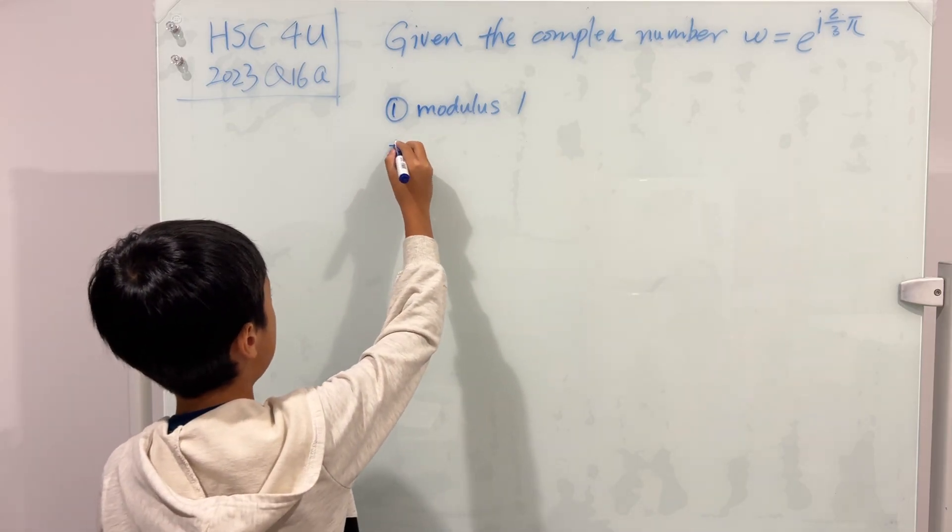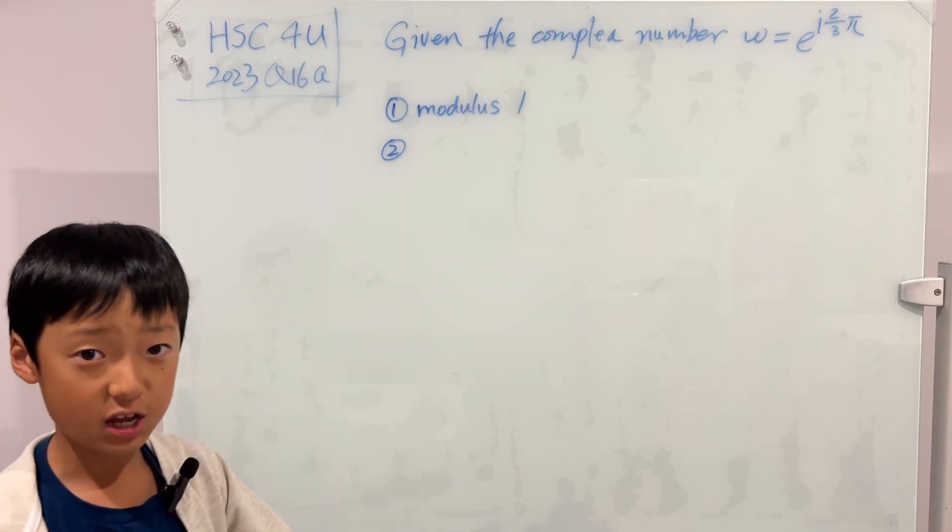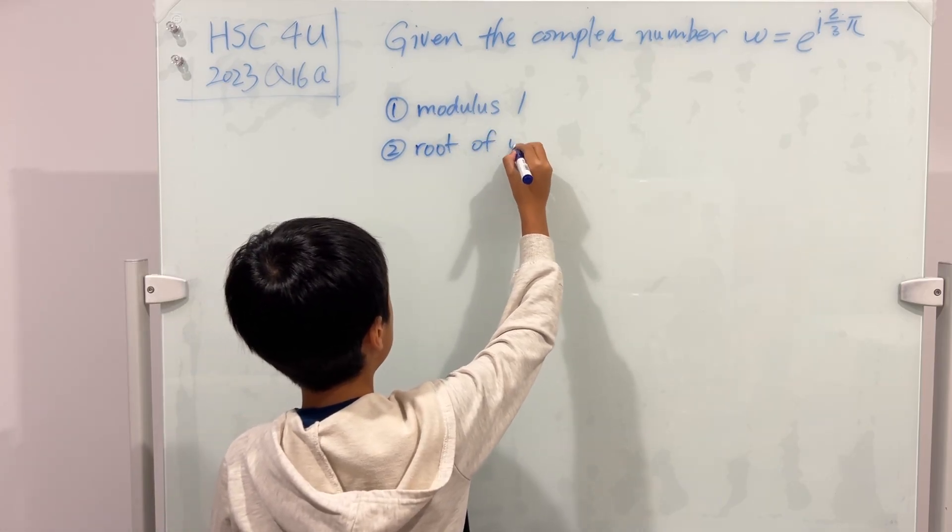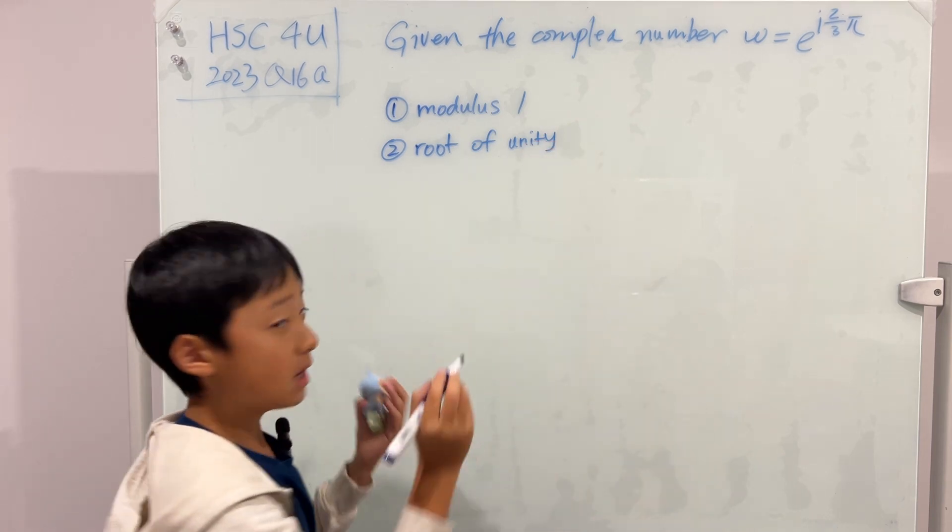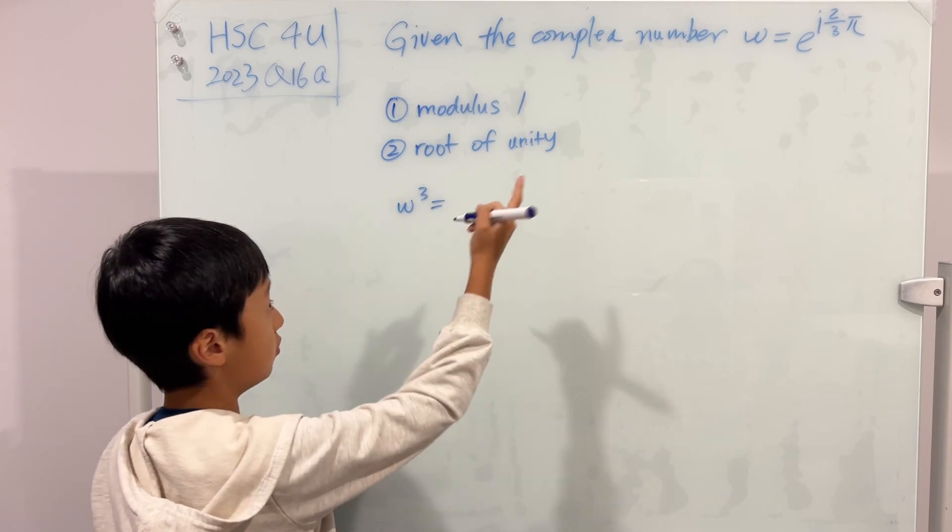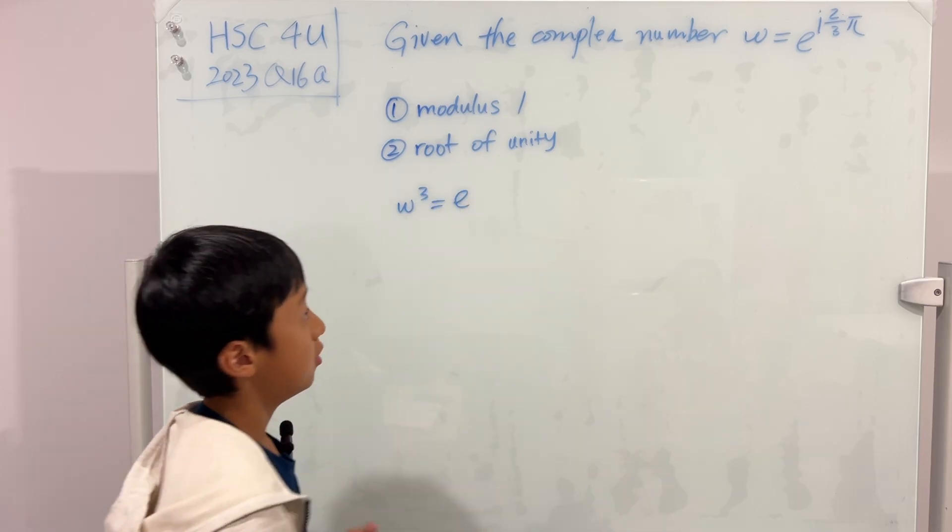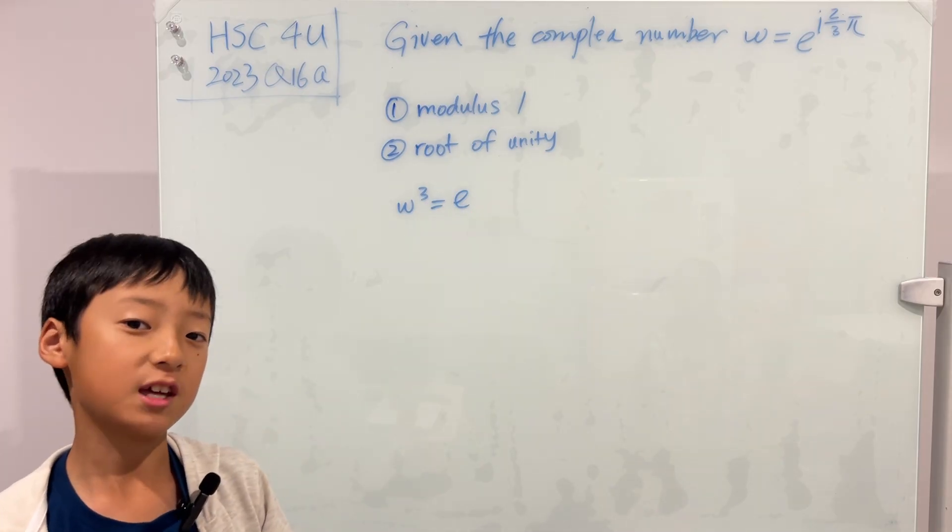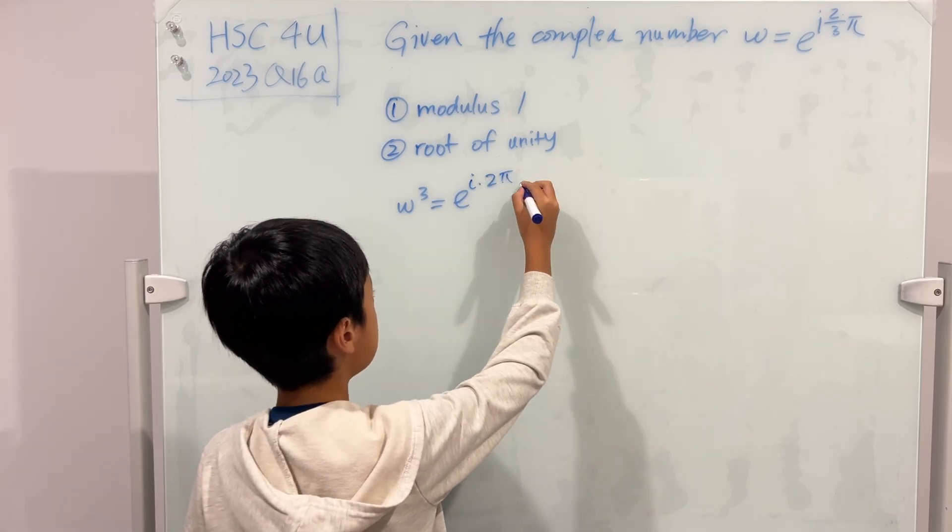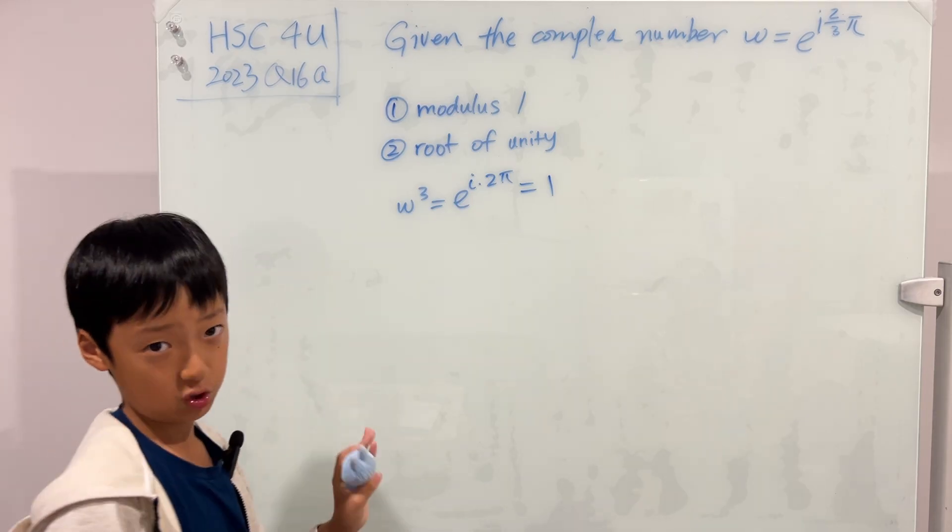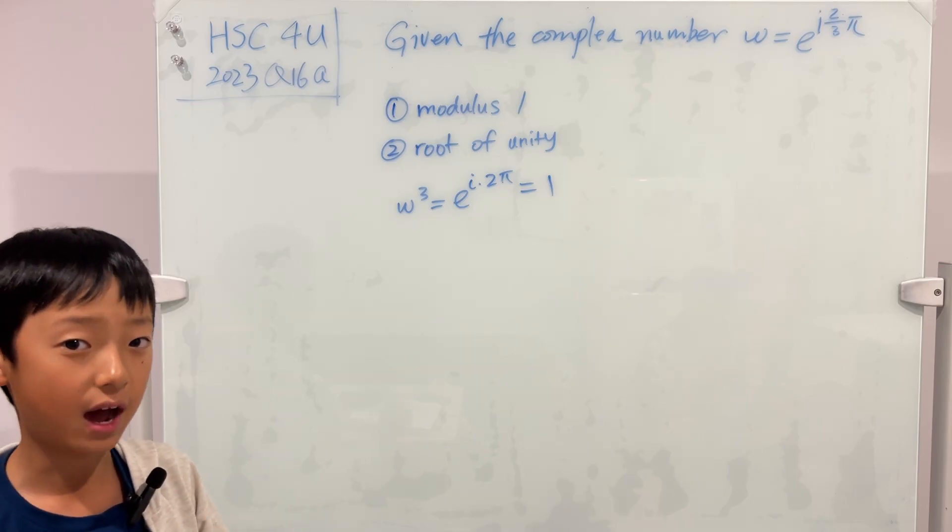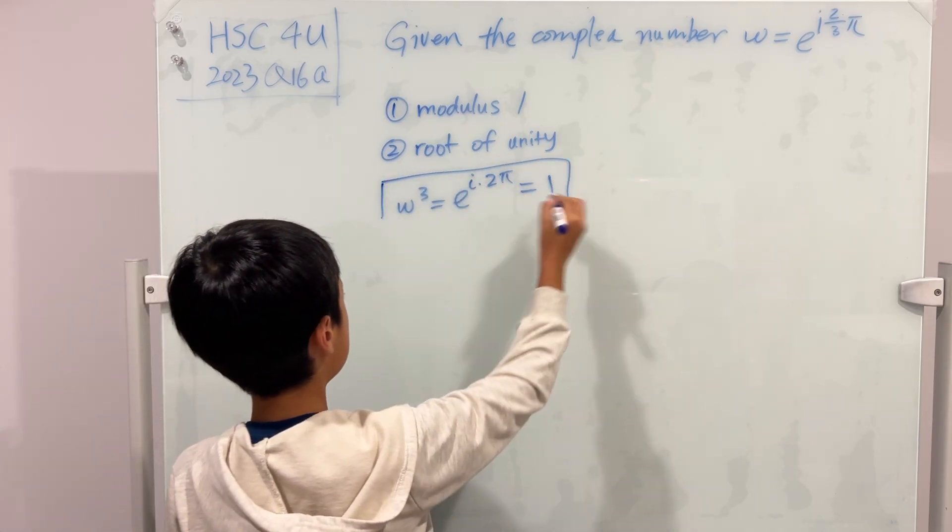Now, another thing is that if you notice, this is actually a root of unity, because we know that w cube, which is equal to that cube, so e to the power, you have to multiply that power by 3 to make it cube. So it will just be i times 2 pi. And this is equal to 1. So that's why it's a root of unity. And this is actually a very important information to let us solve i and ii. So I'll just box this right here.